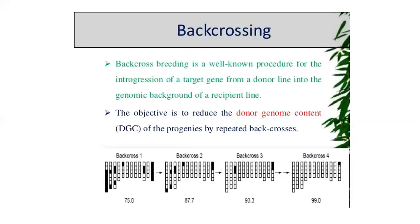Back crossing is a well-known procedure for the integration of a target gene from a donor line into the genomic background of a recipient line. The objective is to reduce the donor genomic content of the progenies by repeated back crossing. For example, if we have an insect-tolerant plant and an insect-susceptible plant and we want to incorporate insect resistance traits from the tolerant line into the susceptible line, we need to cross between them.